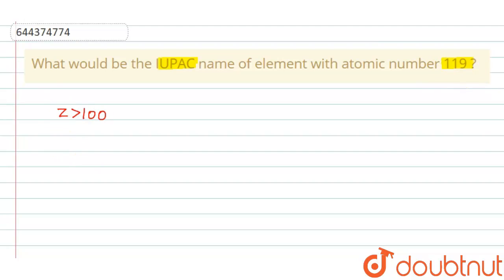...there are some notations like 0, it is named as nil and abbreviated as n. 1 is named as un and abbreviated as u. 2 is named as bi and b. Whereas 3 is written as tri and abbreviated as t.